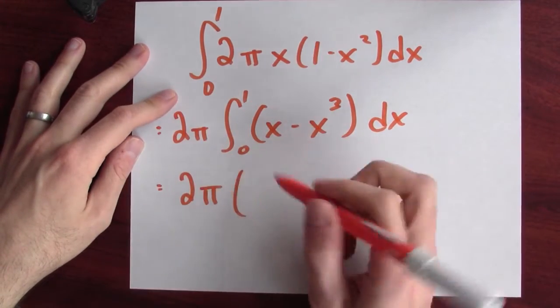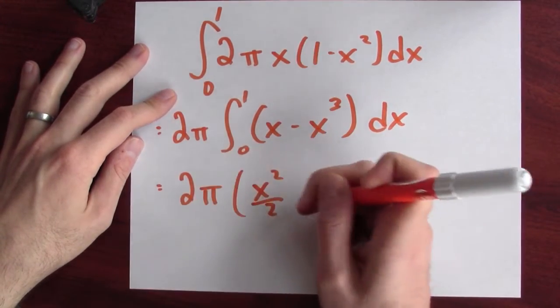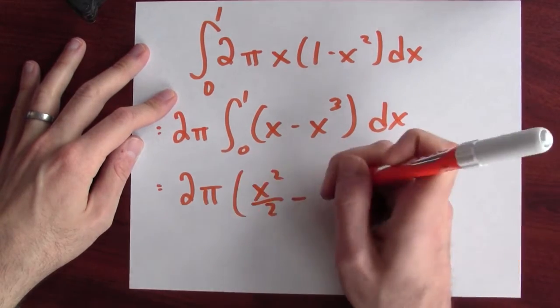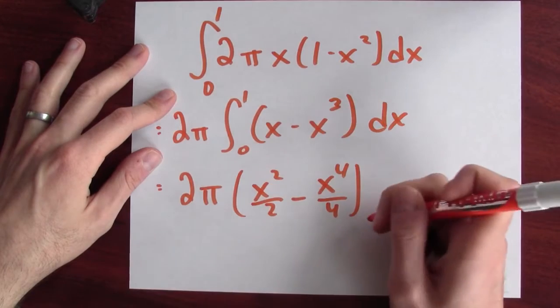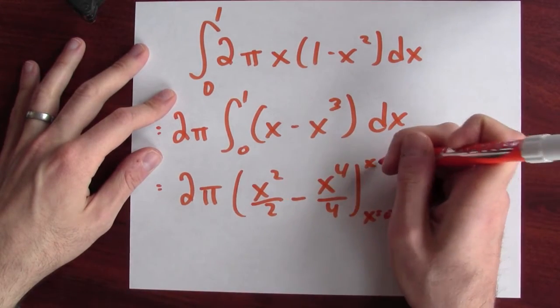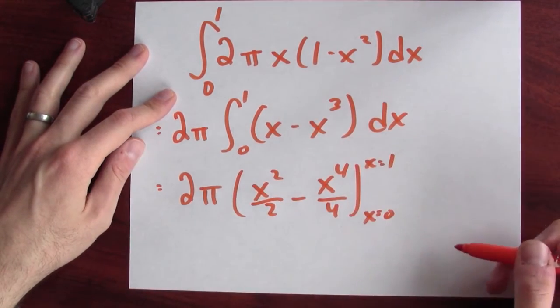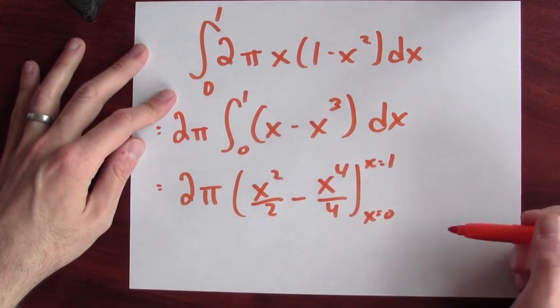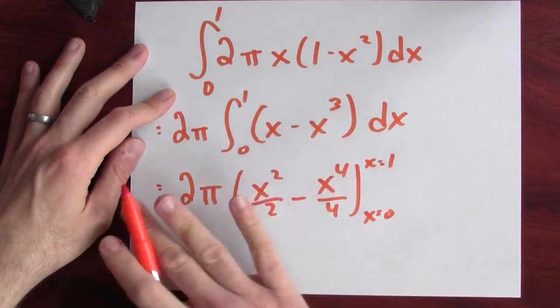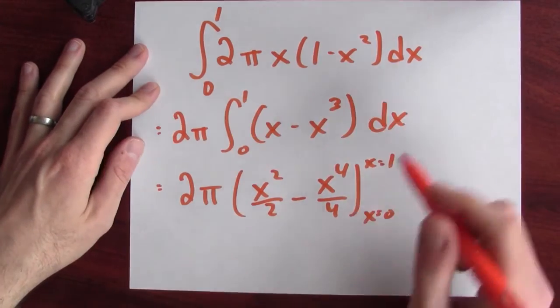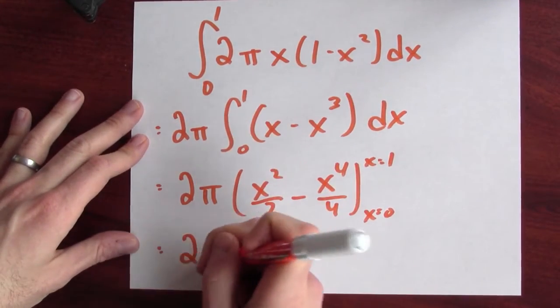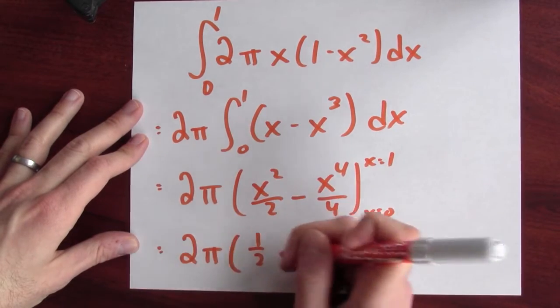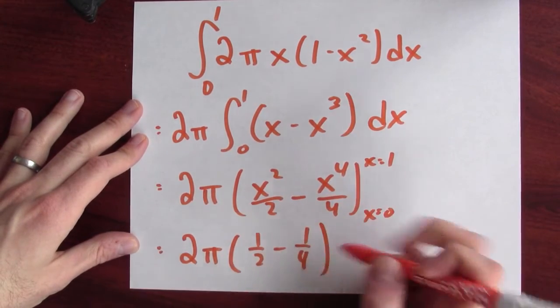2π, antiderivative of x is x² over 2. Antiderivative of x³ is x to the 4th over 4. And I'm evaluating this at x equals 1 and x equals 0. And I'm subtracting, that's the fundamental theorem of calculus. But when I plug in 0, I just get 0. So the answer is just whatever I get when I plug in 1.